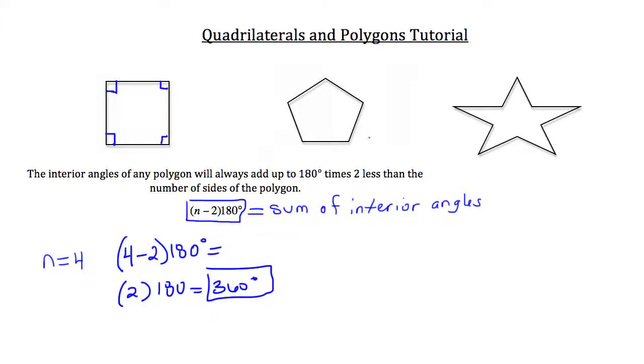You can do the same thing for the pentagon. A pentagon has 5 sides, so the number of sides n is equal to 5. So we can just plug that into our equation. 5 minus 2 is 3. So we'd have 3 times 180, which is 540. So all the interior angles of a pentagon add up to be 540 degrees.